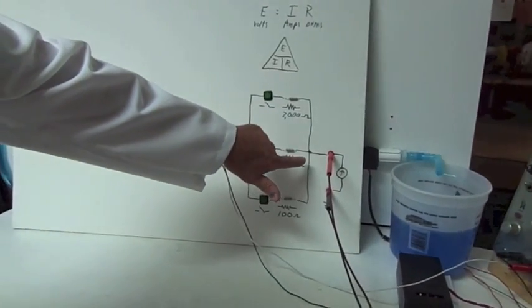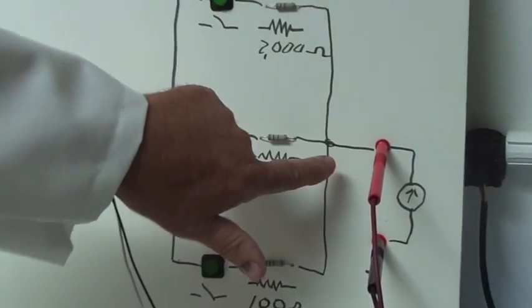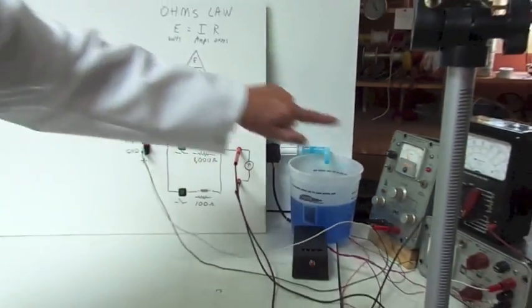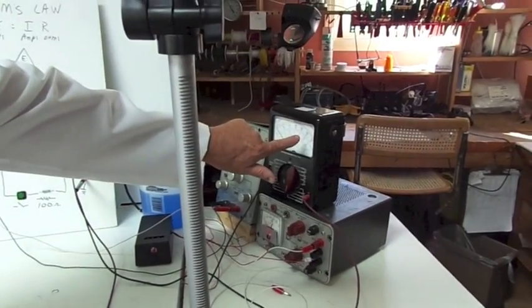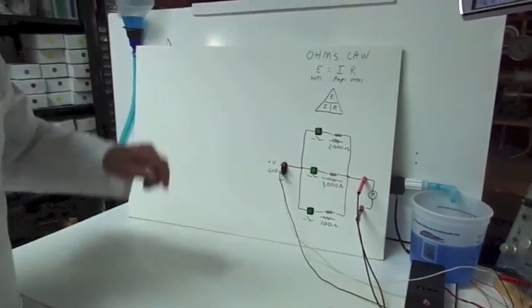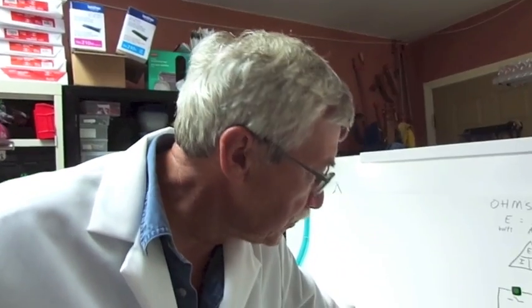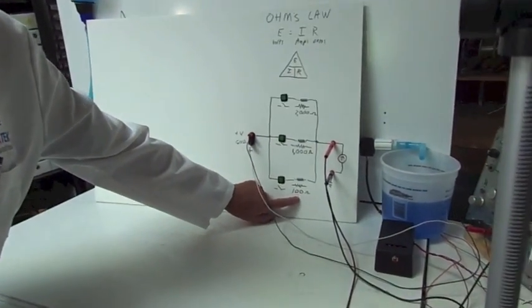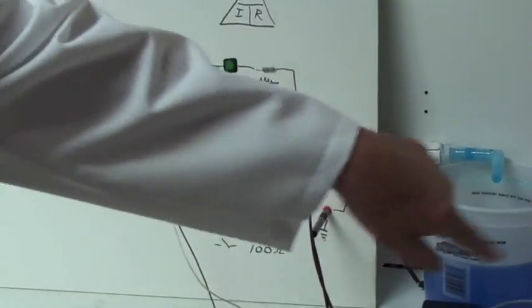On the outside, all the currents come together and they go through this ammeter, which is this meter over here. And we'll see the needle deflect when we turn the circuits on. But first, let's predict, using Professor Ohm's law, what the current is going to be when I put this switch on here, putting the 100 ohm resistor in the circuit and sending that current through the ammeter.